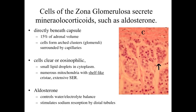The cells of the zona glomerulosa are sitting underneath the capsule and are involved with secreting mineralocorticoids, such as aldosterone. It's roughly about 15% of the adrenal volume, and you can see arch clusters or glomeruli of these cells. They have the morphology of a steroid hormone-secreting cell — clear or slightly eosinophilic cytoplasm, lipid droplets, lots of mitochondria, and extensive smooth endoplasmic reticulum. These cells are involved with the release of aldosterone, which controls water and electrolyte balance — specifically, sodium resorption within the distal tubules of the kidneys.